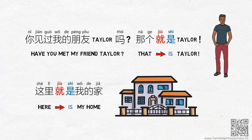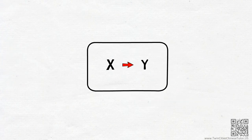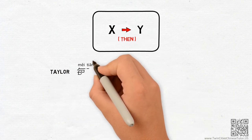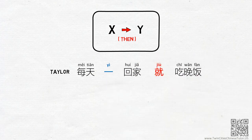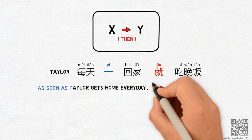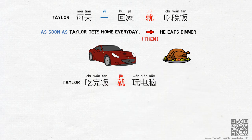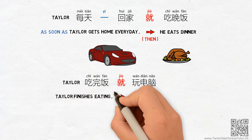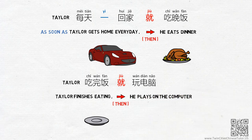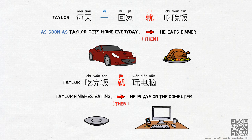Now let's think about a second scenario. This consequential or ordinal arrow can often be translated into the English word then. If I say Taylor每天一回家就吃晚饭, I am saying: As soon as Taylor gets home every day, then he eats dinner. If I say Taylor吃完饭就玩电脑, I am saying: Taylor finishes eating, then he plays on the computer. You don't necessarily need to translate jiu as such — the meaning is implied. Furthermore, on both occasions, jiu emphasizes a sense of immediately after.